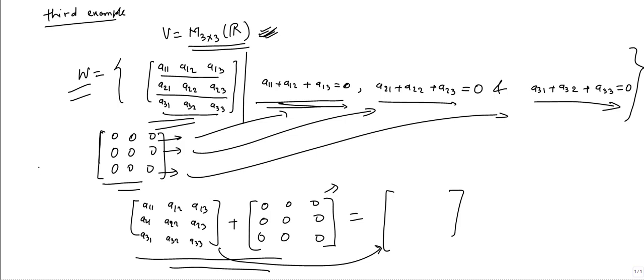So first condition followed by W. Now we need to check second condition. Second condition is saying this subset should be closed under addition.